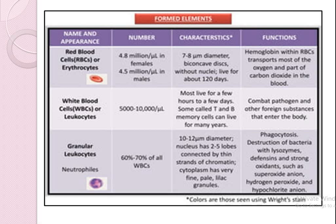White blood cells are called leukocytes. The total count of leukocytes is 5,000 to 10,000 per microliter. The lifespan of WBCs is a few days. They are involved in the eradication or removal of foreign substances that enter the body.